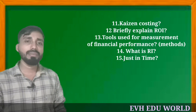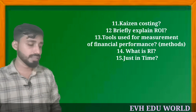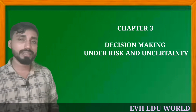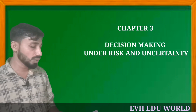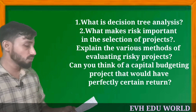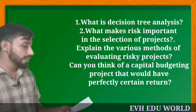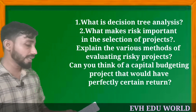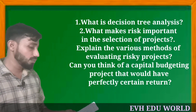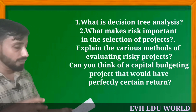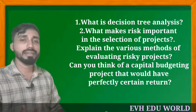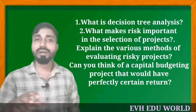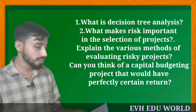Just in time — this is also a question. Chapter 3: Decision Making under Risk and Uncertainty. What is decision tree analysis? What makes risk important in the selection of a project? Explain the various methods of evaluating risk. Can you think of a capital budgeting project that would have a perfectly certain return? How do we risk-adjust the discount rate? Sensitivity analysis is used as a risk tool and technique.